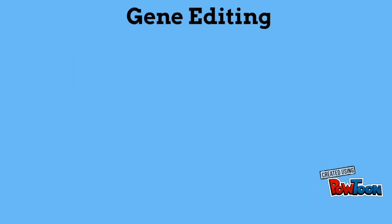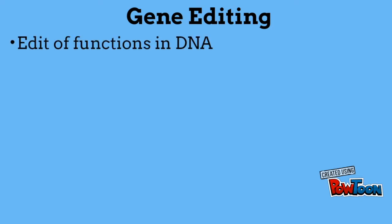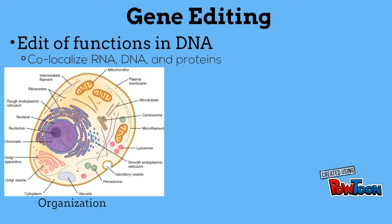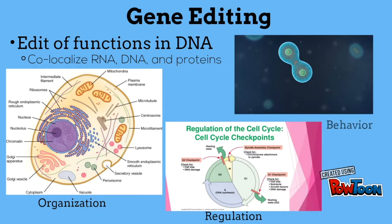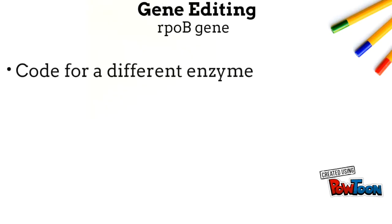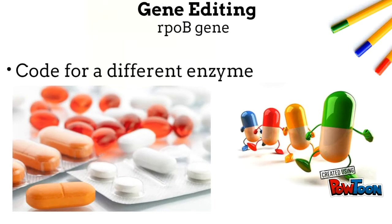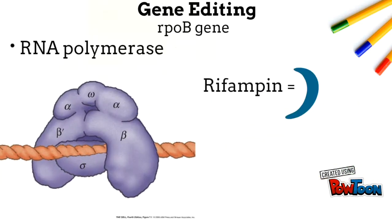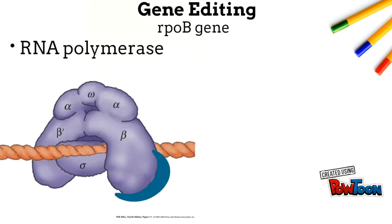CRISPR allows for the editing of functions and DNA sequences within the genome. These techniques are able to co-localize RNA, DNA, and proteins, which will grant control over cellular organization, regulation, and behavior. We can edit the RPOB gene to code for a different enzyme that is more susceptible to inhibition by common antibiotics. In TB, RNA polymerase is the active site, which is the binding site for rifampin.